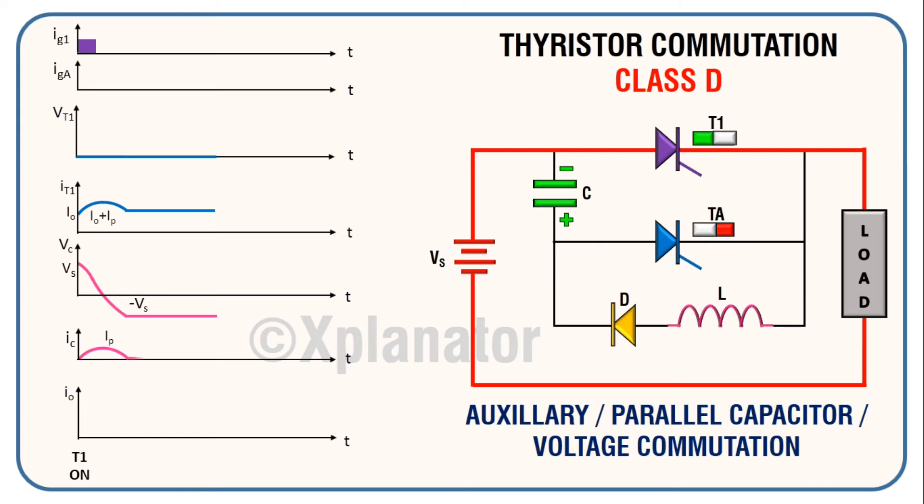Since there is no flow of current, the value remains on zero. In the earlier video, how it charges to VS is also explained. Do check it if you have missed out.